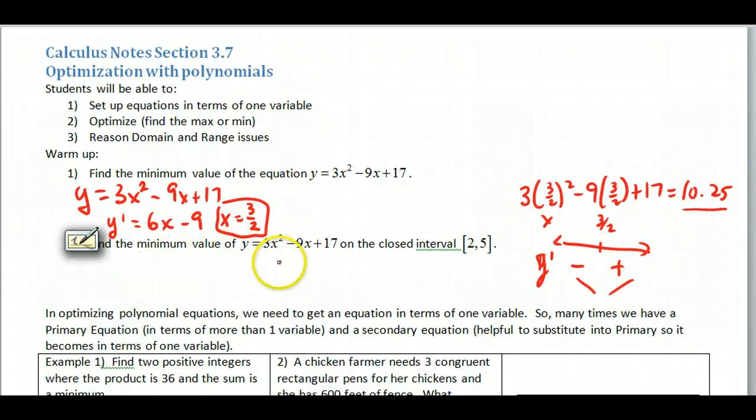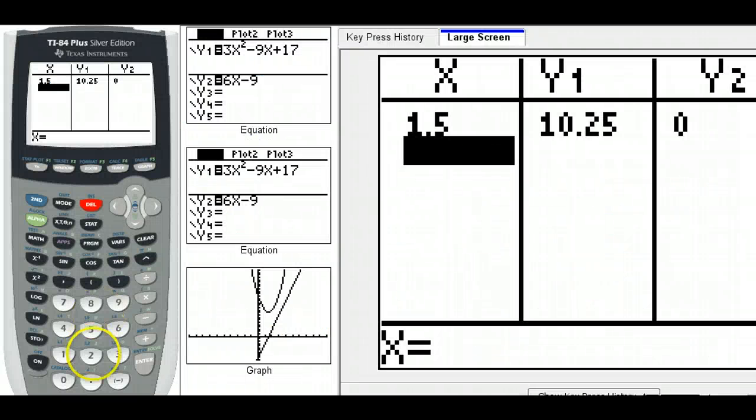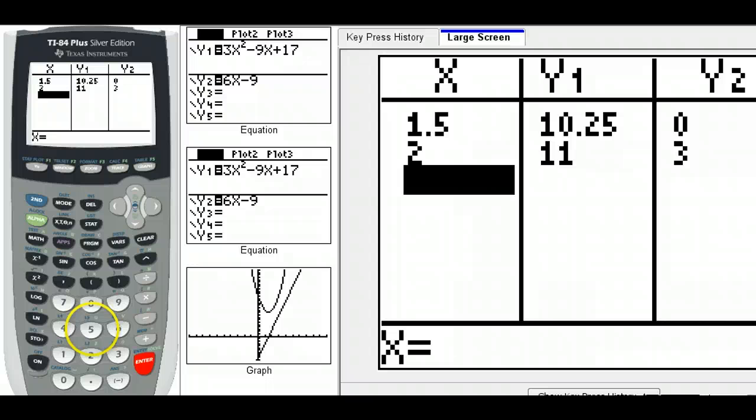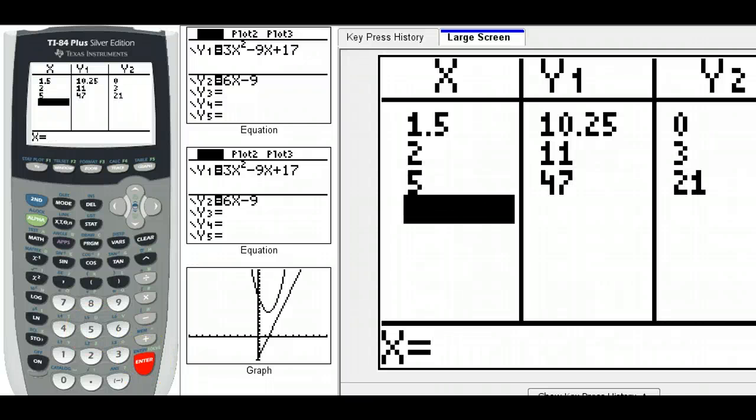Now to do the minimum value on a closed interval, you'd have to see if this falls in there. Well first of all, it doesn't. So all you're going to be doing is comparing these two values, or I should say the y values at these two x values, and so you can just set up a little chart to see which one is the minimum value, 2 and 5.